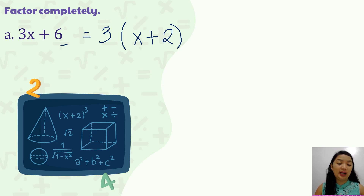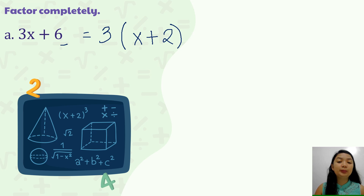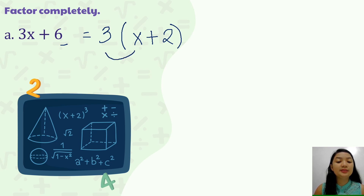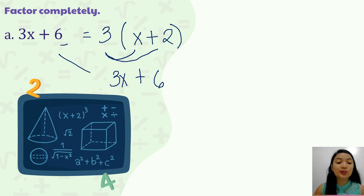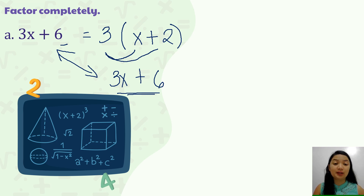If you are not sure with your answer, you may double-check it. Since factoring is the reverse of multiplication, we can verify by distributing: 3 times x gives 3x, and 3 times 2 gives positive 6. Since we get the same expression, our factors are correct.